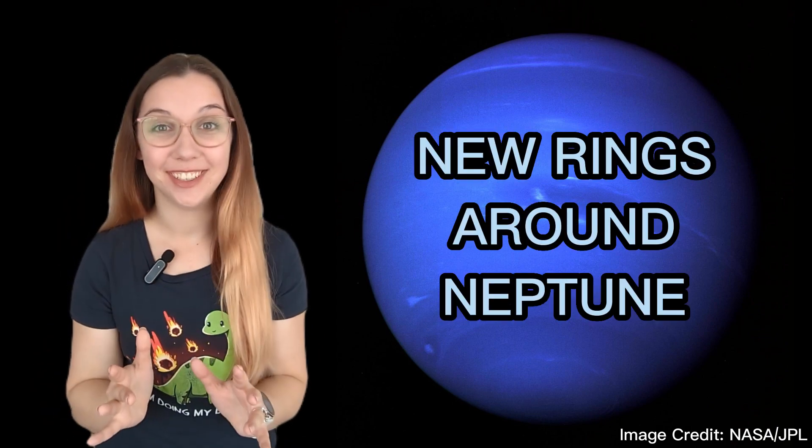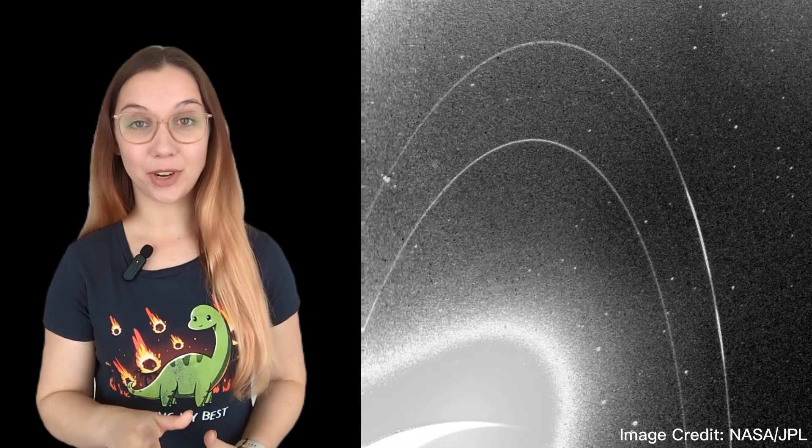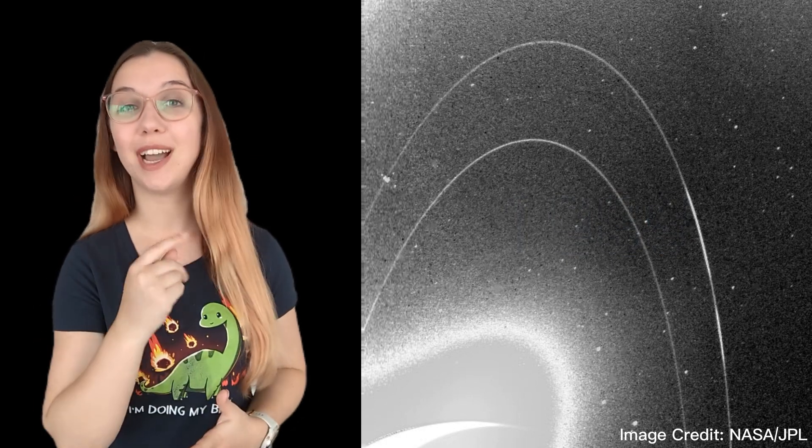We have found new rings around Neptune. The first time we got a good look at Neptune's rings was in 1989, when the Voyager 2 spacecraft flew by the blue ice giant. That was also the last time we got a detailed look at Neptune's rings.